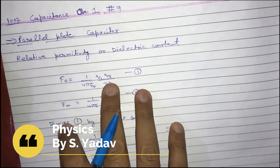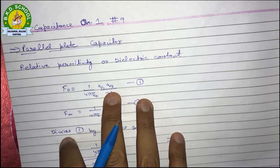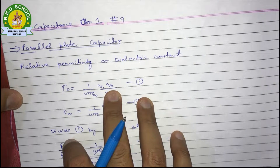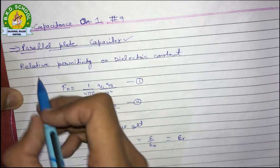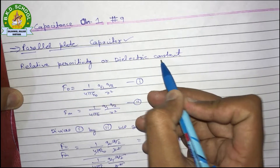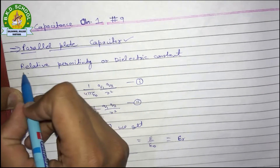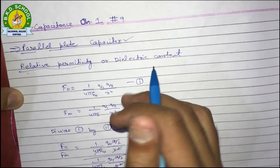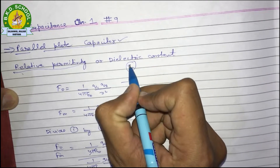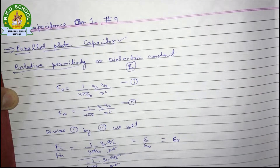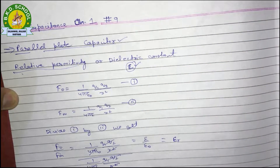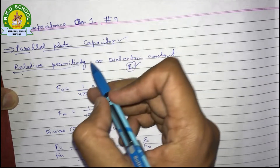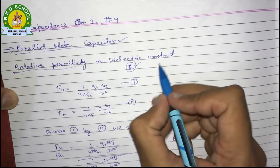Hello dear students, in the last video of this chapter we studied about the capacitance of a parallel plate capacitor. The next topic of this chapter is relative permittivity, or dielectric constant. Let's understand the meaning of relative permittivity, and also permittivity — which we know as epsilon naught — which was introduced in the first video of this chapter.